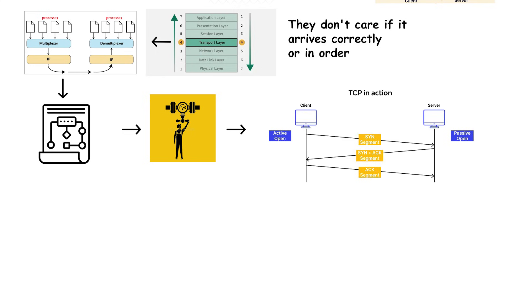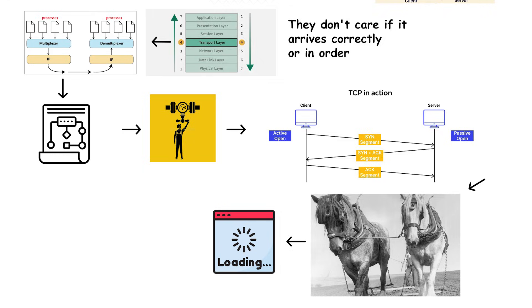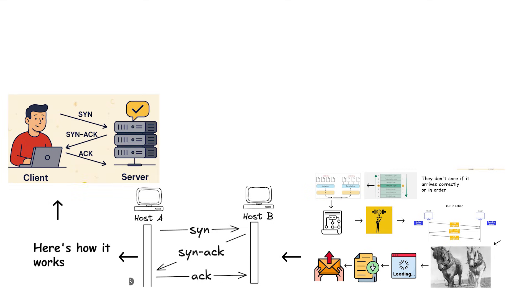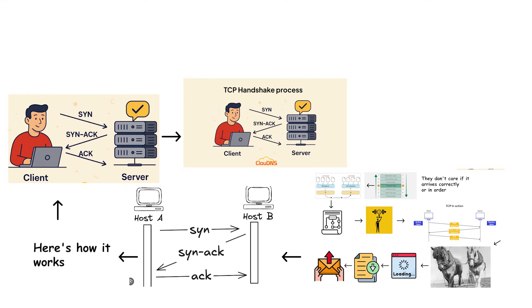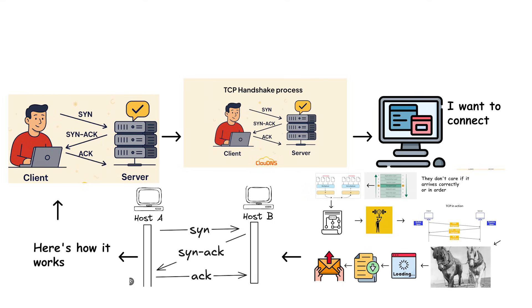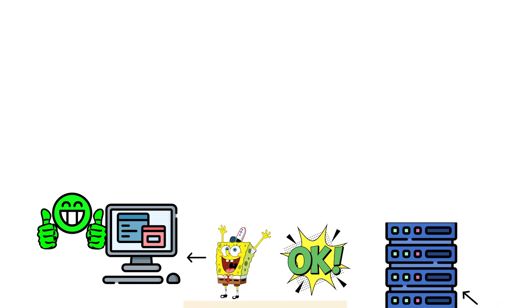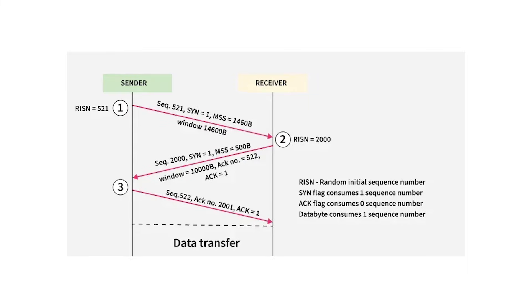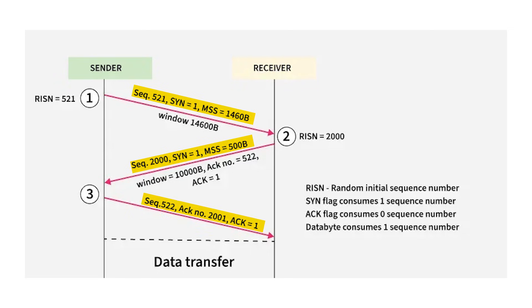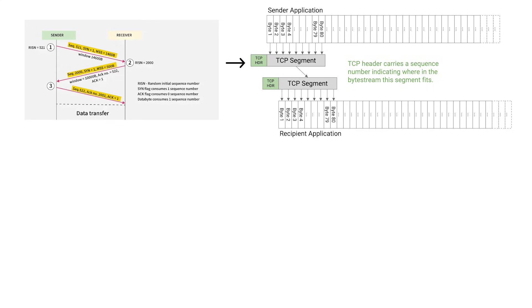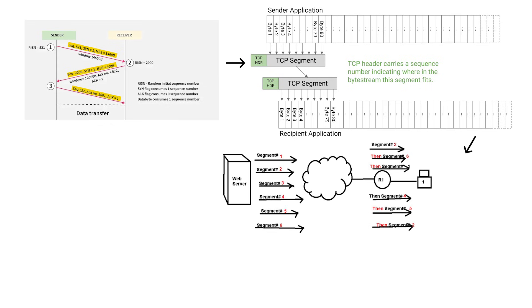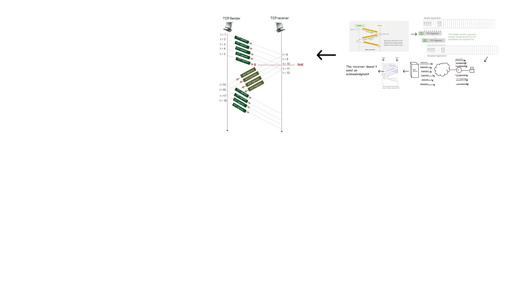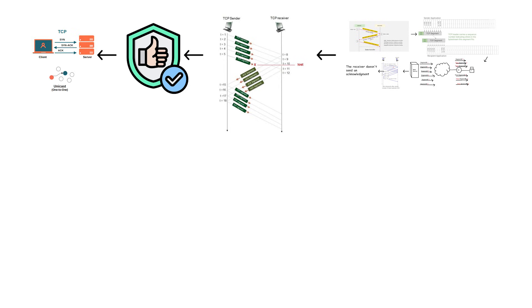TCP — Transmission Control Protocol — is the workhorse of the internet. When you load a webpage, download a file, or send an email, you're using TCP. Before sending any data, TCP establishes a connection via the three-way handshake: your computer says 'I want to connect,' the server says 'I'm ready,' and your computer confirms 'let's go.' TCP breaks your data into segments, each with a sequence number so the receiver knows what order to reassemble them. As segments arrive, the receiver sends back acknowledgements. If a segment doesn't arrive or arrives corrupted, the receiver doesn't acknowledge it and the sender automatically retransmits. That's reliability.